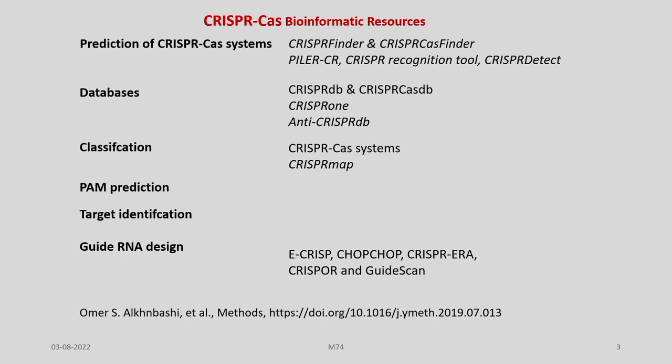We also have many databases which have been built by various researchers and which help us further in CRISPR and Cas9 research and development of tools. Some of these databases are CRISPRdb, CRISPR-Cas DB, and others. There are bioinformatics tools which help in the classification of CRISPR-Cas9 systems, such as CRISPR-MAP. There are also workers who have developed tools for prediction of PAM as well as identification of targets.